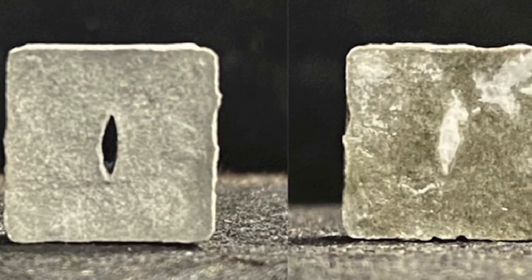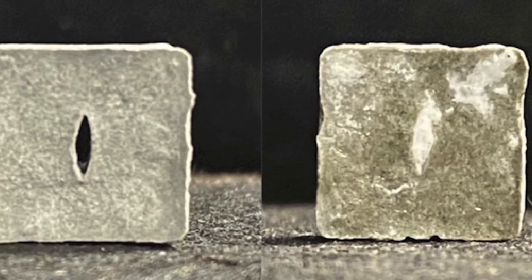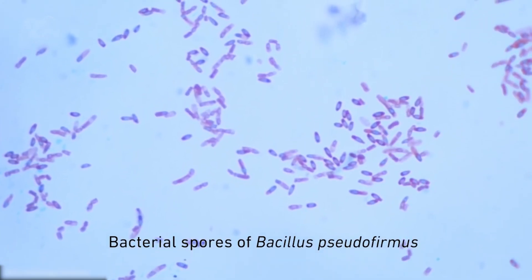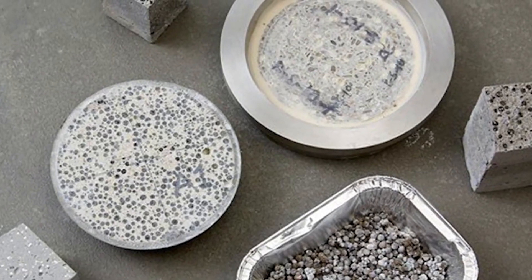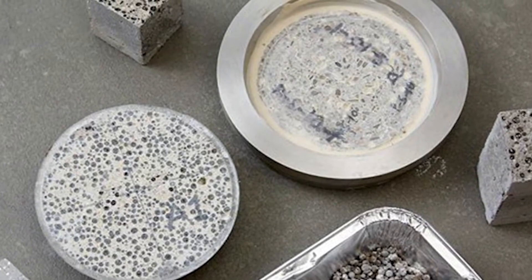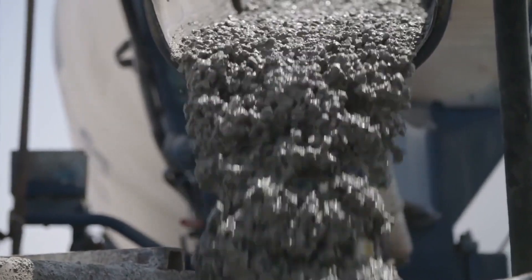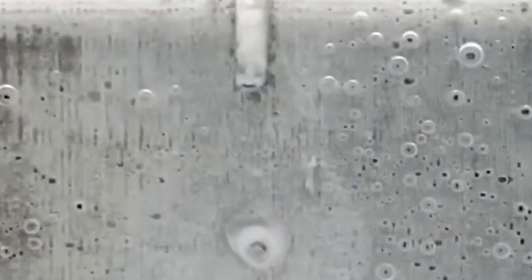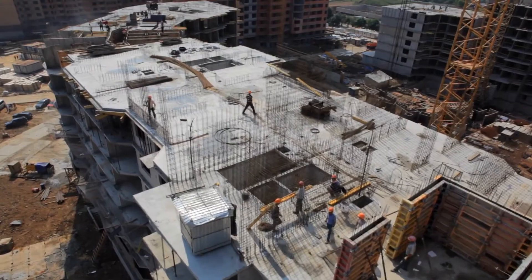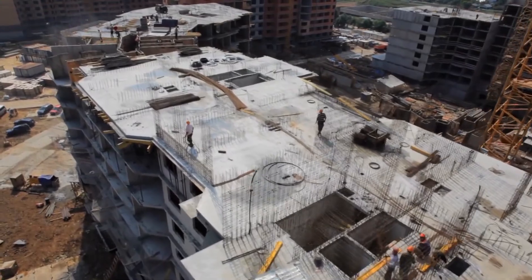But now researchers have introduced self-healing concrete. They have added bacterial spores mixed with the food sources like yeast extract to the concrete. When concrete cracks, these bacteria are exposed to oxygen and water, so they start multiplying. This multiplication produces calcium carbonate, limestone, which seals the cracks again. All kinds of concrete will have this kind of technology in the future.